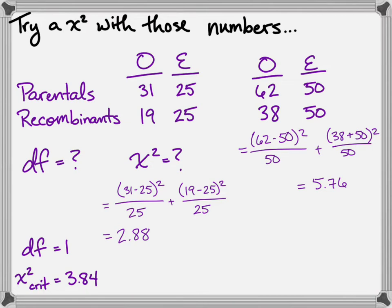With the 2.88, that is less than 3.84. So we did not find enough difference between the observed and expected values to reject our null. So we fail to reject our null. That means no linkage. Parent and recombinant values appear to be fairly similar to the expected.